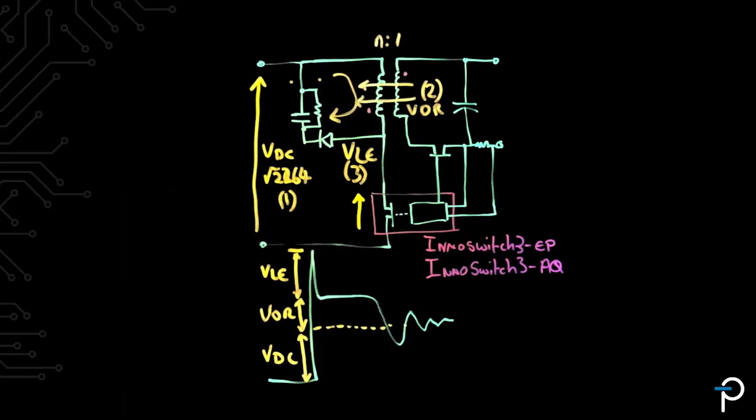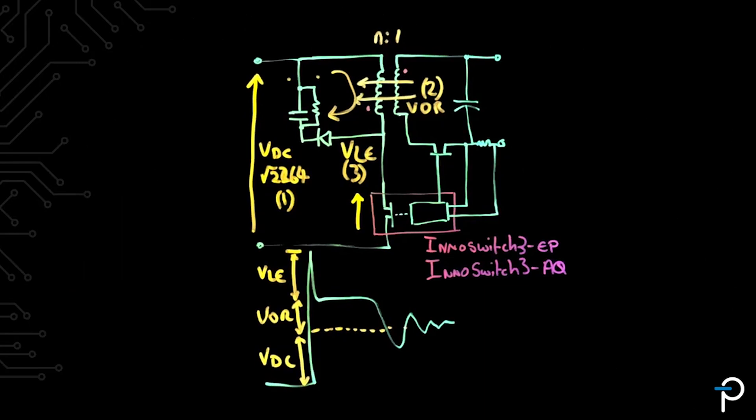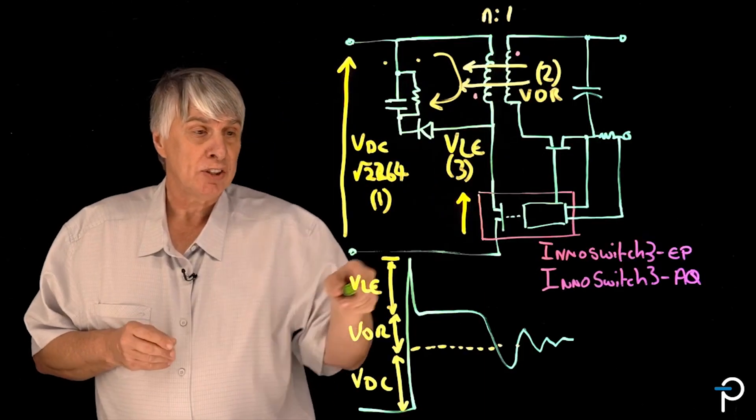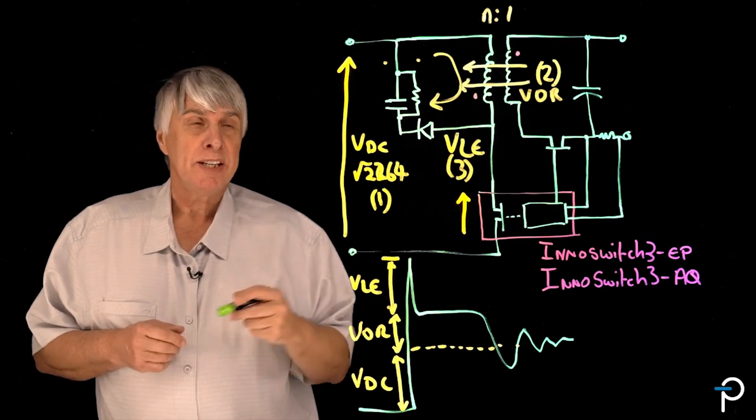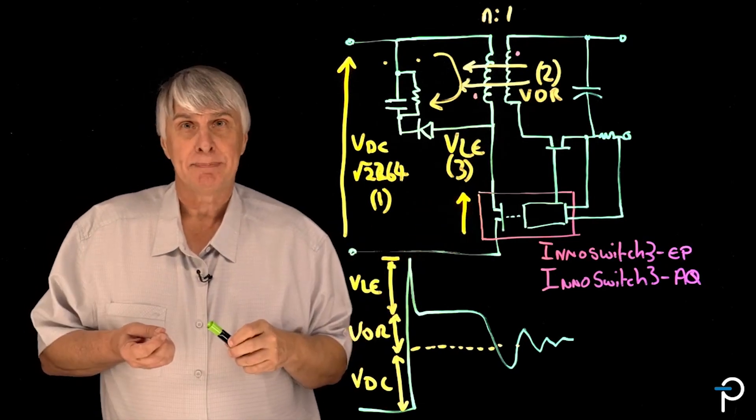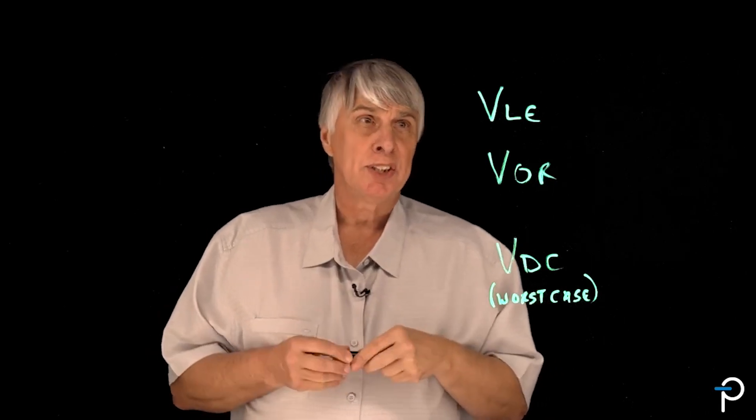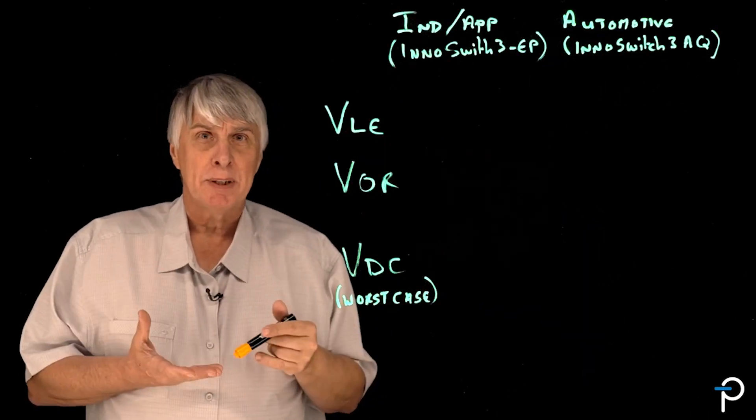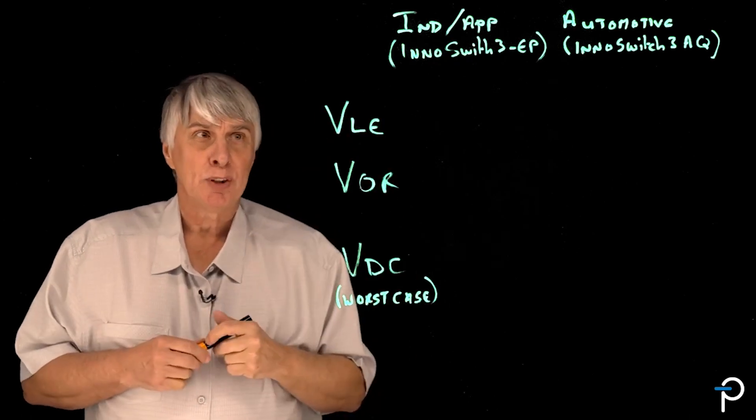Having established that there are three elements which create the voltage stress across the primary switch, let's spend a few moments to put some values against these three parameters so we can see what the voltage rating of this switch needs to be in a typical application. Let's consider the worst case conditions in both an automotive application or an industrial and appliance application and fill in the parameter values we have here.